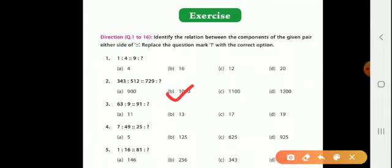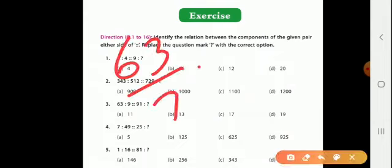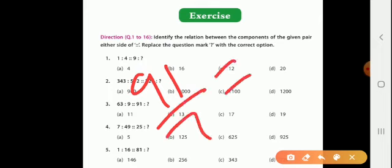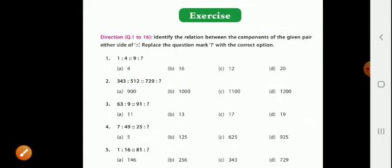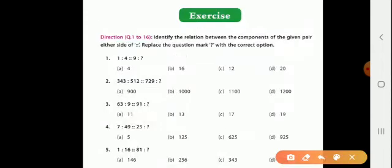Question: Sixty-three is to nine as ninety-one is to what? Sixty-three divided by seven equals nine, so ninety-one divided by seven will be thirteen. Seven times nine is sixty-three, and seven times thirteen is ninety-one. The right answer is thirteen.